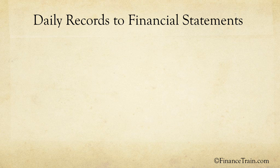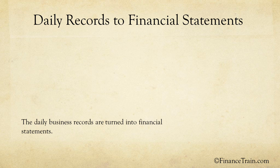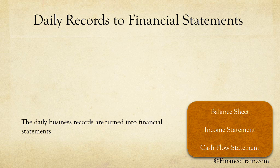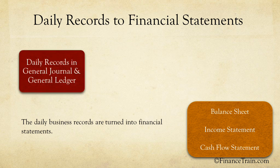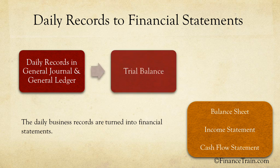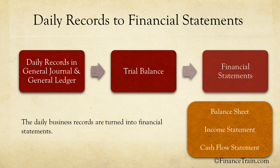At this stage it is important to know that all the financial transactions that a business records on a daily basis are turned into financial statements such as balance sheet, income statement and cash flow statement, which are used by the outside world for various purposes. These financial statements provide a snapshot view of how the business has performed during a given period. We start by recording all business transactions in a general ledger and a general journal. From there, we prepare a trial balance which tells us if all the transactions are correctly recorded, and using the trial balance, the financial statements are prepared.